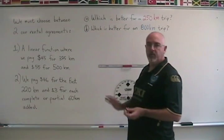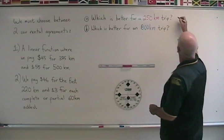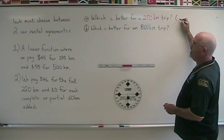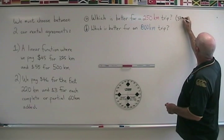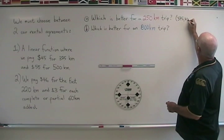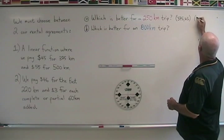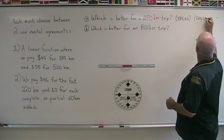So we will write down the two points we have figured out so that we can do the slope formula. We have (375, 45) and (500, 55).